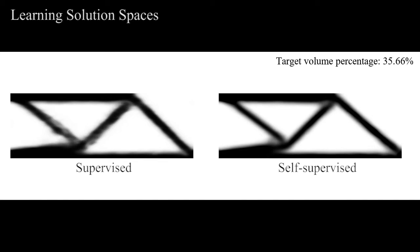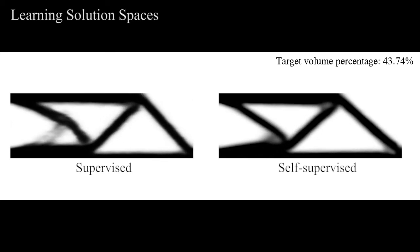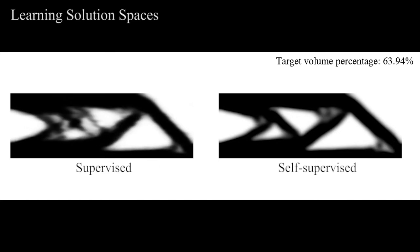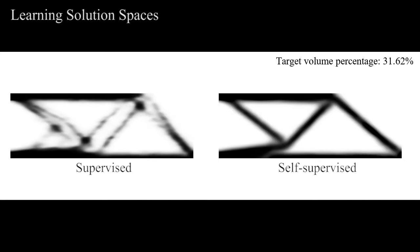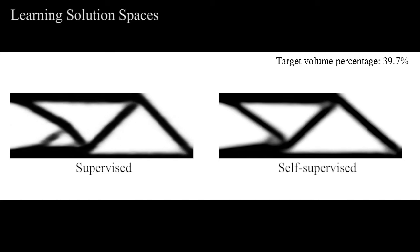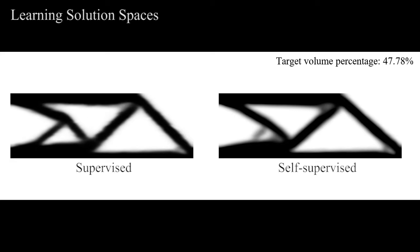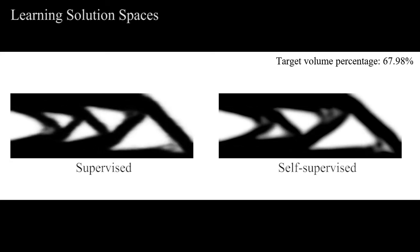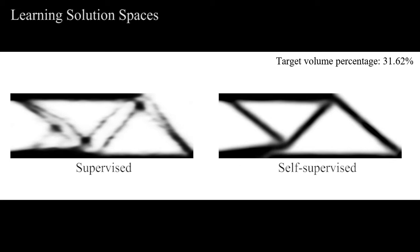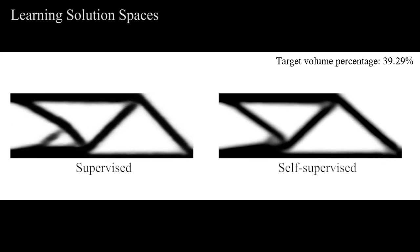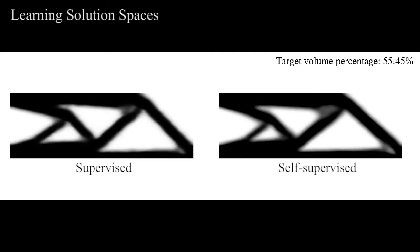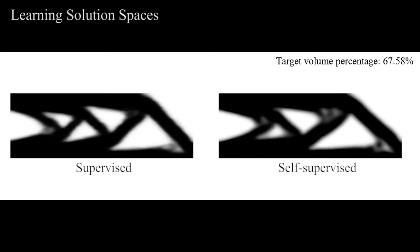We further demonstrate the capability of our self-supervised learning setup to represent continuous spaces of optimal solutions. Here we show the optimal density distributions for a continuous range of material volume constraints, trained in both supervised and self-supervised fashions. We note that the supervised approach leads to abrupt topology transitions with infeasible in-between designs, whereas our method yields mechanically valid, smoothly evolving solutions at lower computational cost.